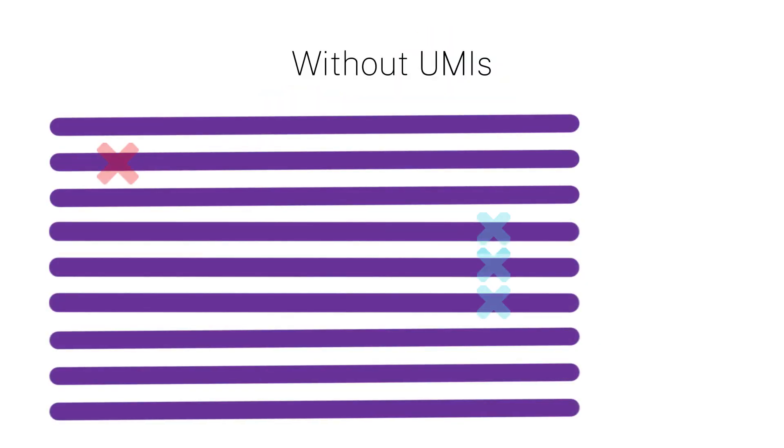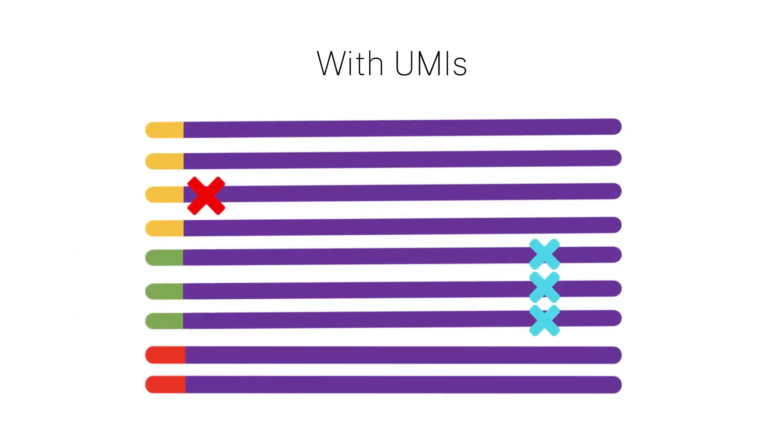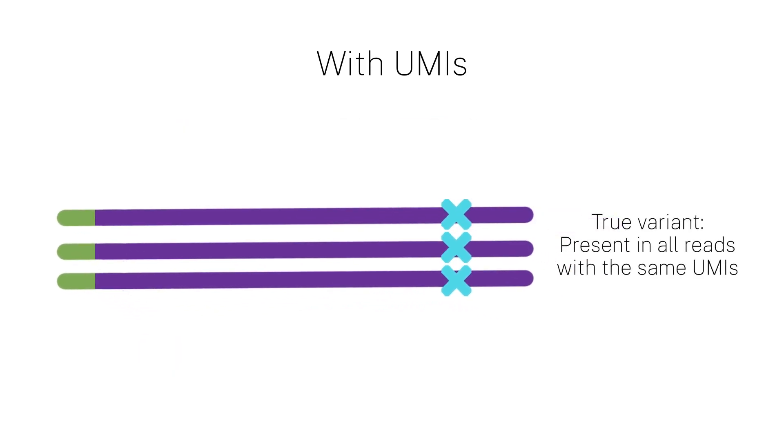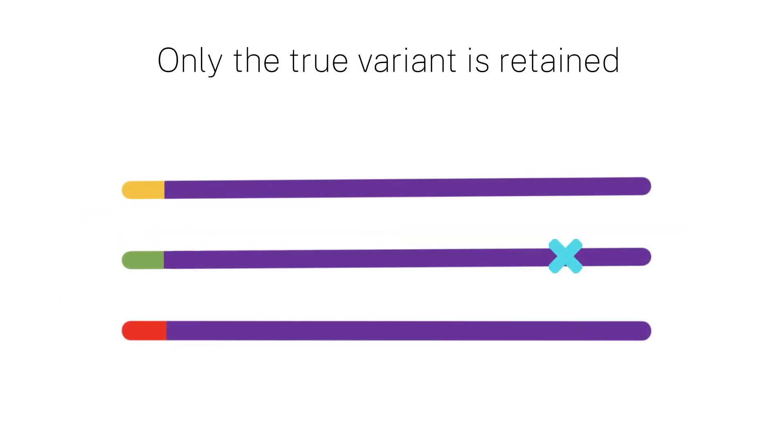UMIs can also aid in qualitative analyses by controlling for amplification bias. Without UMIs, sequencing errors may be mistakenly called as sequence variants. UMIs can help differentiate between the sequence variants that occur in all sequences with the same UMI, and the sequencing errors that only appear in a single or few reads with the same UMI. This allows researchers to distinguish between true and false variants.